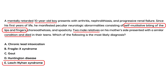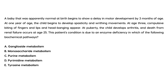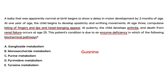The last vignette: a baby apparently normal at birth begins to show delayed motor development by three months. At one year, the child develops spasticity and writhing movements. At age three, compulsive biting of fingers and lips and head banging appear. At puberty the child develops arthritis, and death from renal failure occurs at age 25. The question asks which biochemical pathway is involved — the molecule mostly involved is guanine, and guanine is a purine, so the answer is C: purine metabolism.